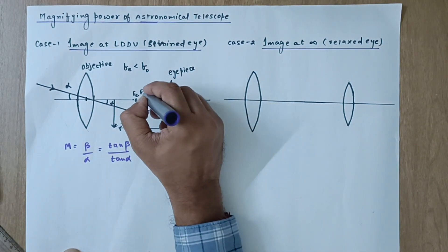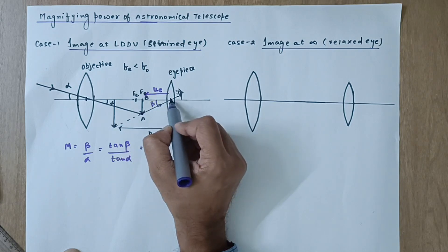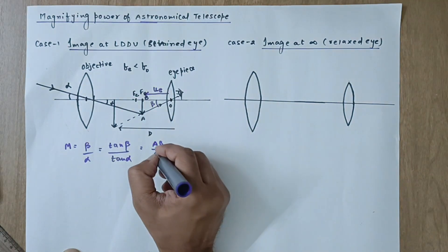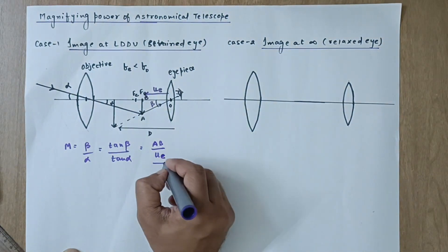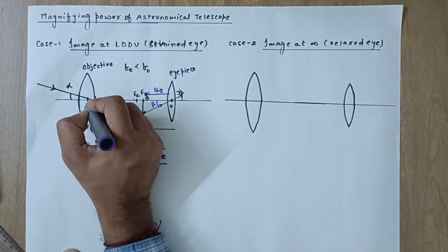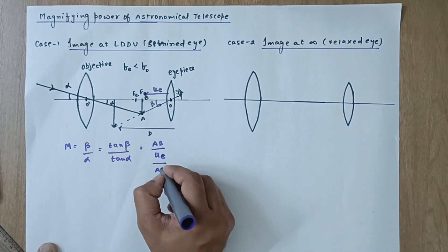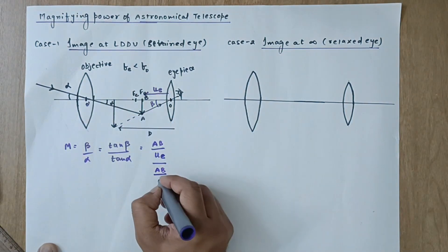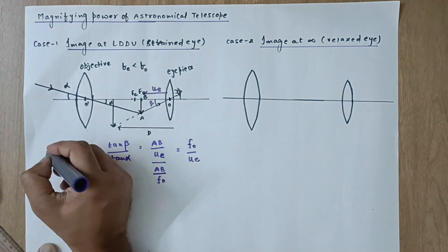From triangle AOB, tan beta equals AB divided by OB. OB is the object distance for the eyepiece, which equals ue. From the triangle at the objective, tan alpha equals AB divided by B O-dash, which is the focal length of the objective fo. Therefore, tan beta over tan alpha gives fo divided by ue. This is one form of the magnifying power formula.